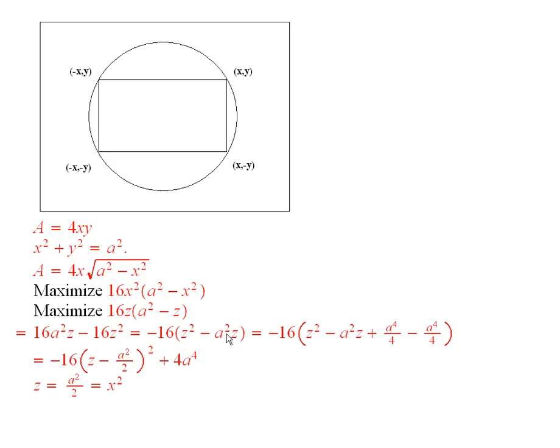So we take half of this, we take that half of it and square it, and add it in and subtract it off. And then that yields that this is equal to z minus a squared over 2, all squared. Then I multiplied through by the minus 16, and this is what I got.